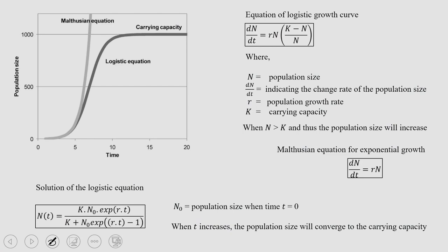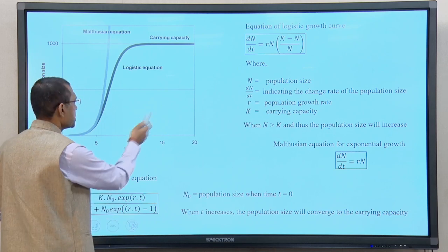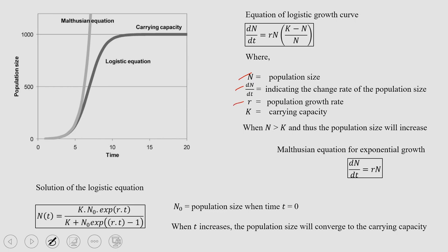There are a couple of equations and derivations you can carry out to understand or calculate the system dynamics. These are very standard equations where you can easily calculate when and how a particular species' growth would be limited or regulated, or when it would achieve the carrying capacity. This is the famous Malthusian equation of exponential growth of population, where r denotes the population growth rate, N means the population size, and dN/dt indicates the rate of change of the population size. It is a very simple expression of population growth.